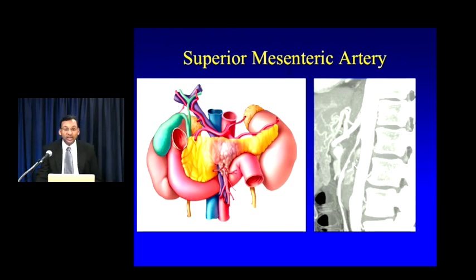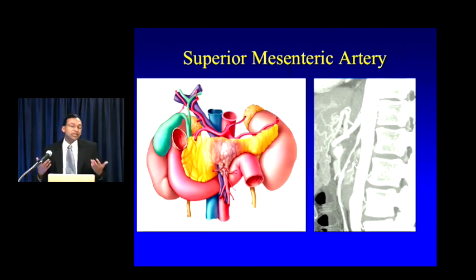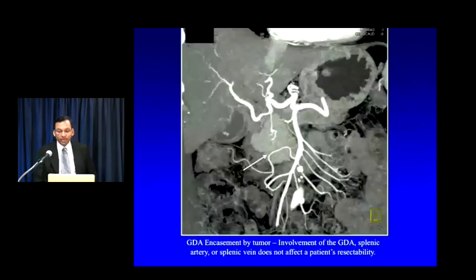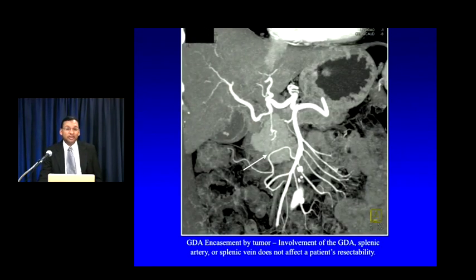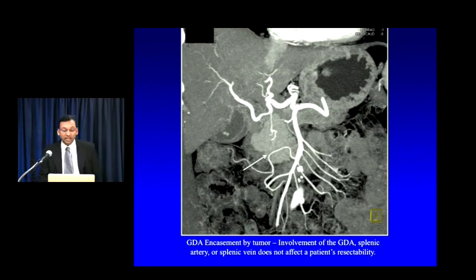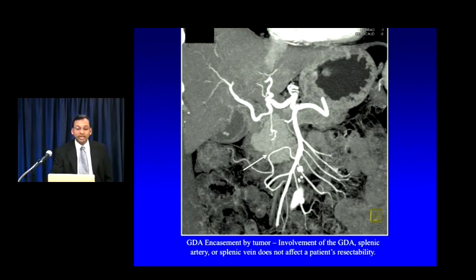Remember that other vessels don't matter so much — concentrate on those five vessels. Smaller vessels like the GDA are not a big deal. Here's an example where the GDA is actually encased by tumor, but that doesn't matter — the GDA comes out as part of the surgery and does not preclude resection.